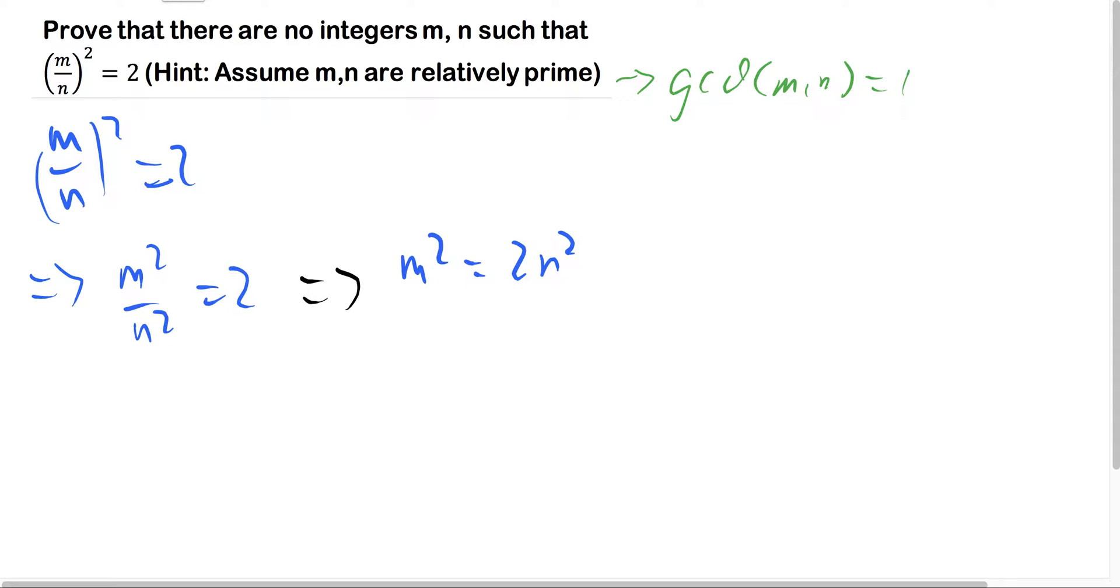Now what this implies is that 2 can divide m squared.